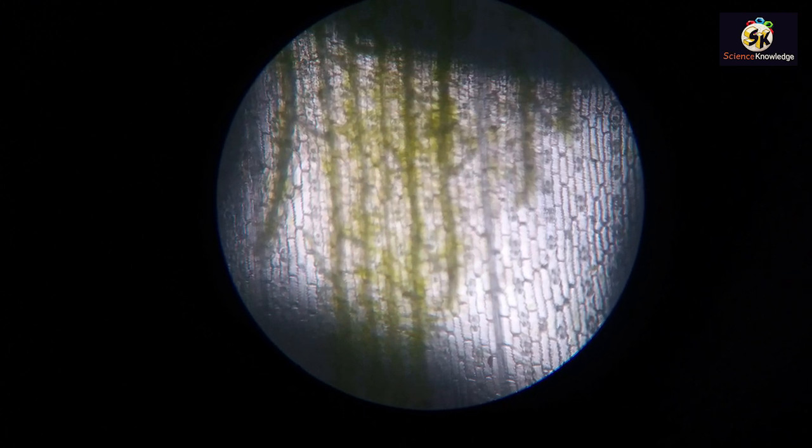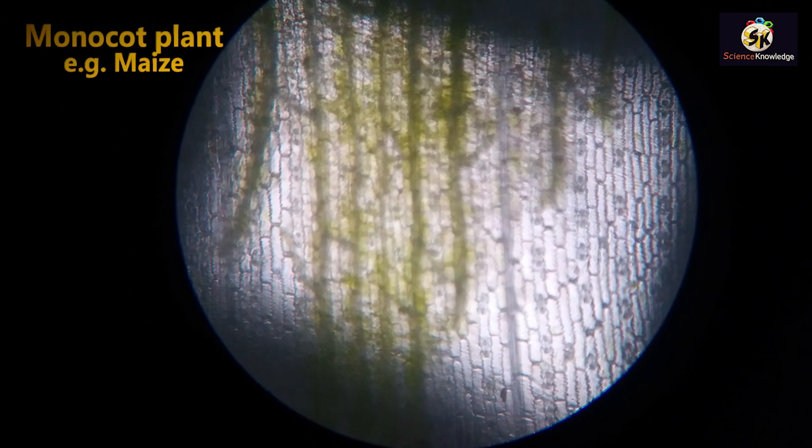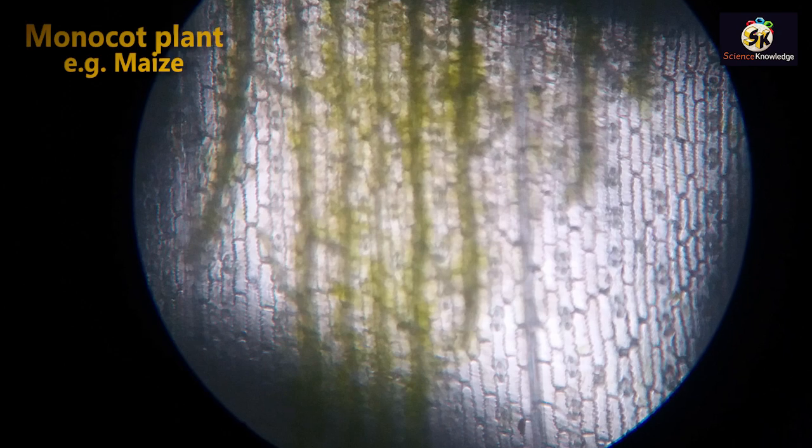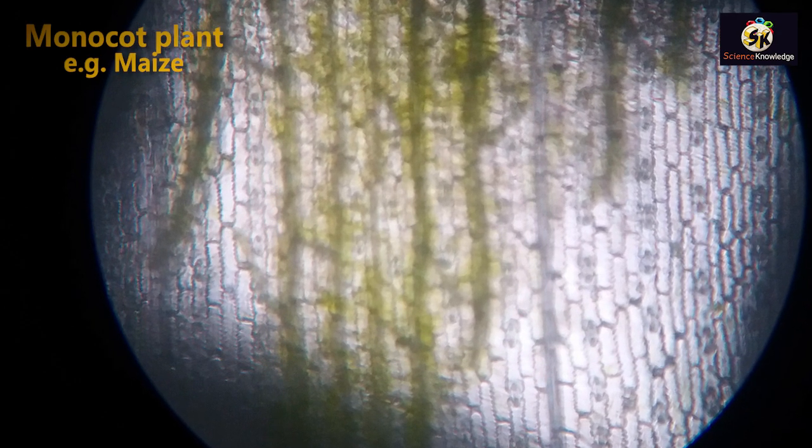In monocots the stomata are arranged in a single line, so we have to measure the stomata present in one line and multiply it with the number of lines present in one square millimeter area.